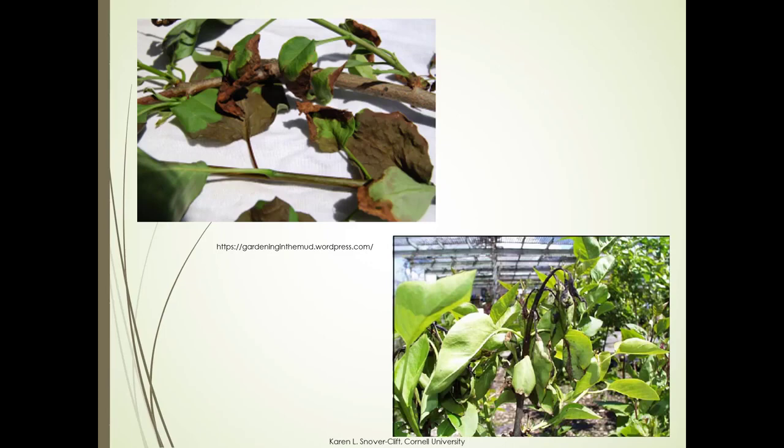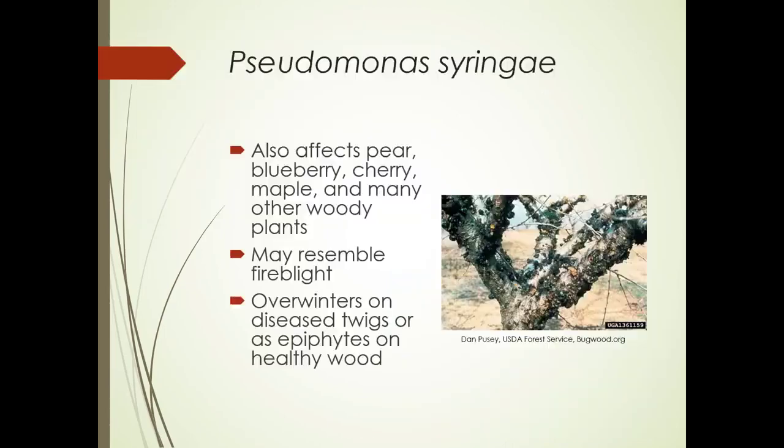Lilac blight also affects pear, blueberries, cherries, maples, and many other woody plants. It may resemble fire blight, but is probably more common on this side of the mountains than fire blight is. It overwinters on diseased twigs or stems as epiphytes on healthy wood.